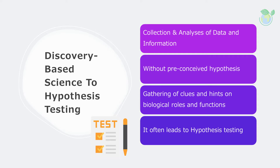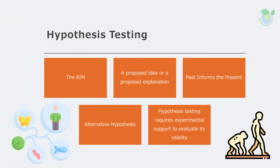The scientific method is termed as hypothesis testing. The aim is to formulate and test the validity of a hypothesis. A hypothesis is a proposed idea or explanation for the observed natural phenomenon. Hypotheses could be formulated based on past observations. Scientists often also provide another angle of attempted explanation, which we call an alternative hypothesis.